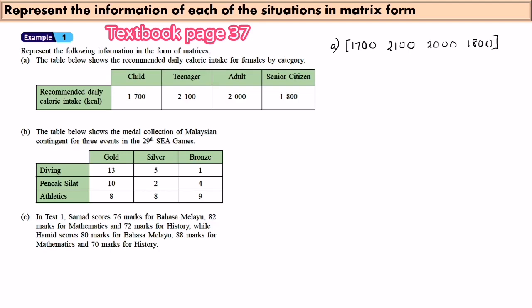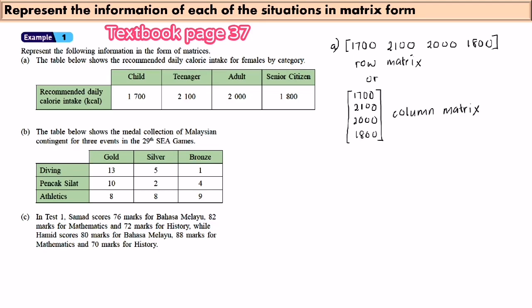This is a row matrix. What is a row matrix? A row matrix has only one row — you can see here there is one row only. You can also write the matrix as a column matrix. A column matrix has only one column, so you can see one column only.